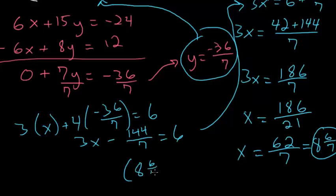So we'll turn this into a mixed number as well. 7 goes into 36 five times and there's 1 leftover. So 8 and 6 sevenths is our x, and our y is minus 5 and 1 seventh. And this is our final answer.